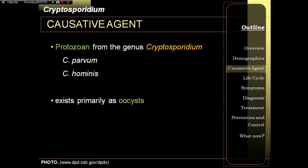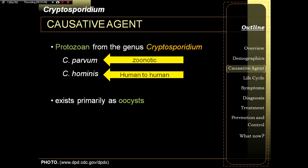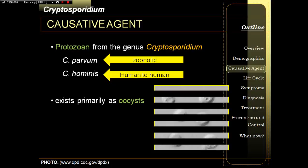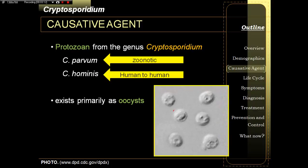Cryptosporidium parvum is the species which is zoonotic in nature, coming from animals to humans, while C. hominids is transmitted from human to human. As you can see, the cysts are circular in nature — thus they are called coccidians.